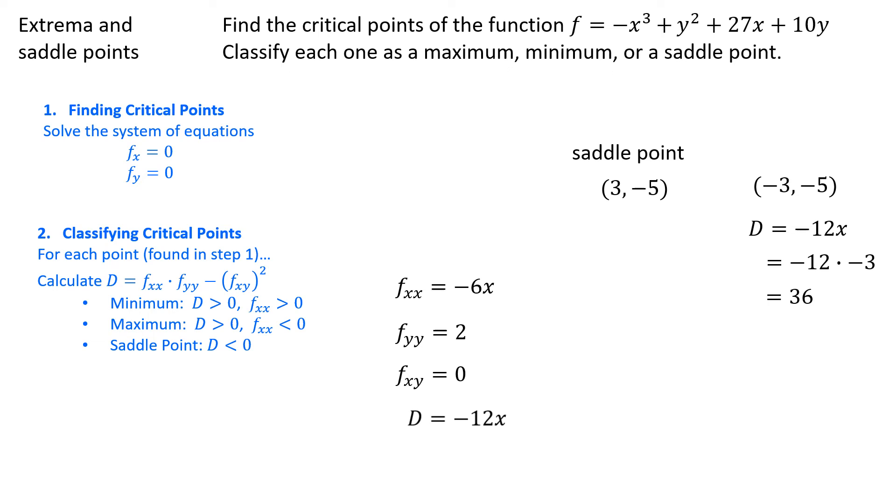That would depend on whether or not the second partial derivative with respect to x is positive or negative. Taking the second partial derivative and plugging in the point in question leads us to a positive second partial derivative. Therefore, we can classify this point as a minimum.